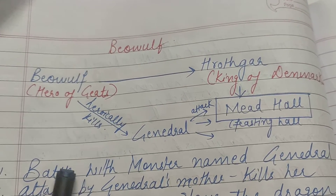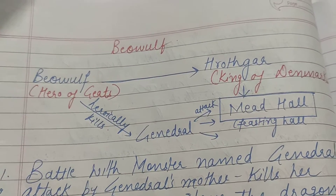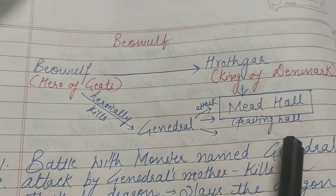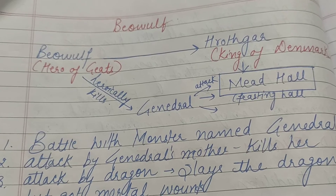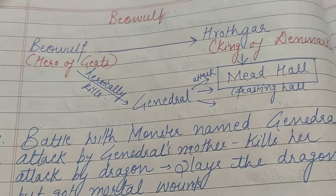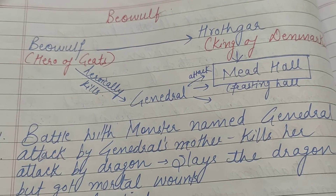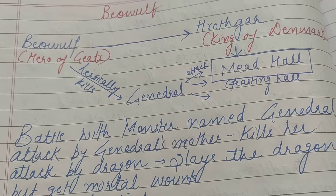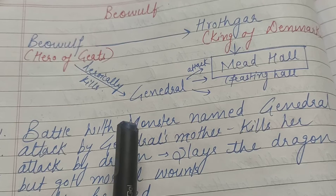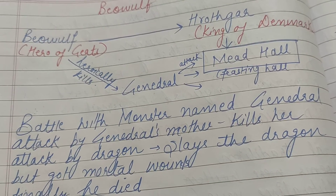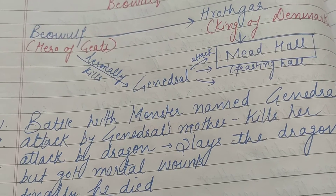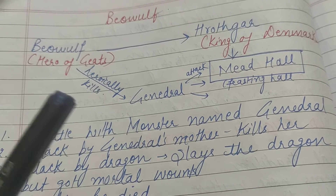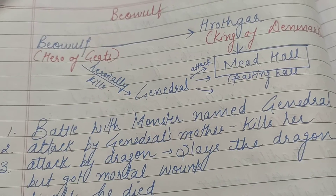Beowulf ki brief summary: Beowulf hero tha Geats ka — Geats naam ki ek tribe thi jiska hero Beowulf tha. Hrothgar King of Denmark tha. Hrothgar ne Mead Hall banaya — Mead Hall ek Feasting Hall hota hai jahan sare ministers khana khate hain, drinking karte hain, gaana gaate hain, aur king se prizes milte hain. Ek monster jiska naam tha Grendel usne is Mead Hall ko attack kiya aur woh roz raat ko attack karta tha aur sabhi ministers ko pareshan karta tha. Beowulf ne jab yeh kahani suni to wo Hrothgar ko apna helping hand deta hai aur Grendel ko heroically kill kar deta hai.